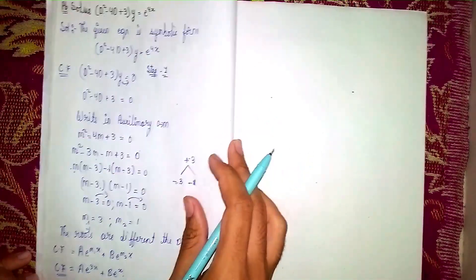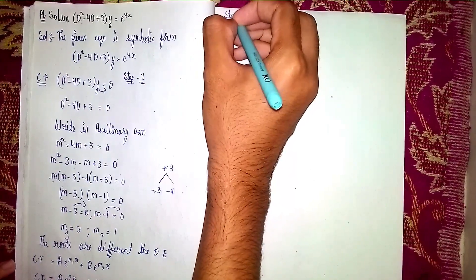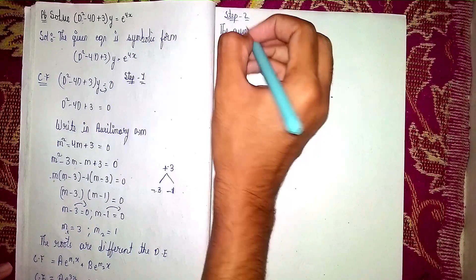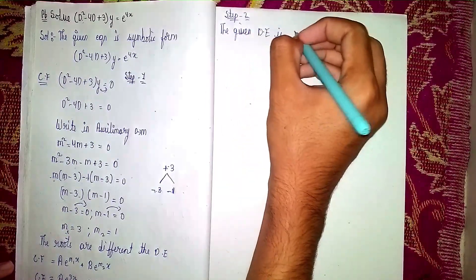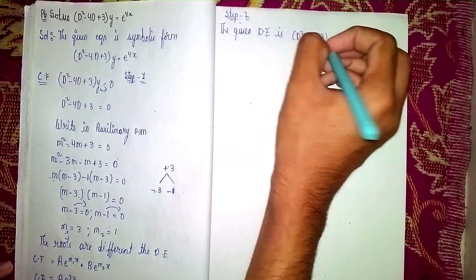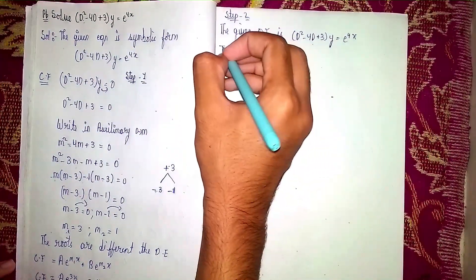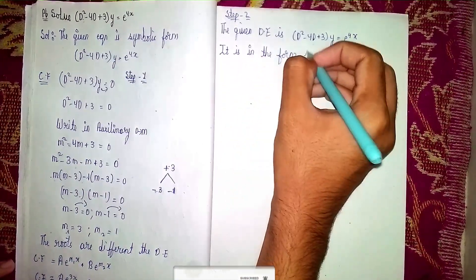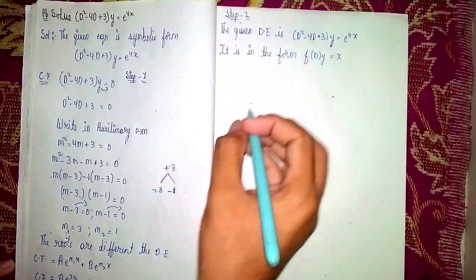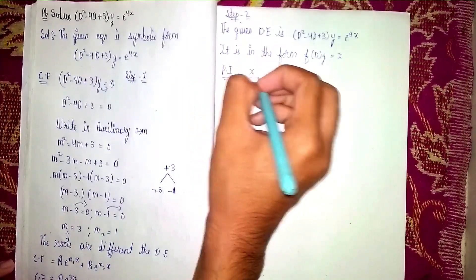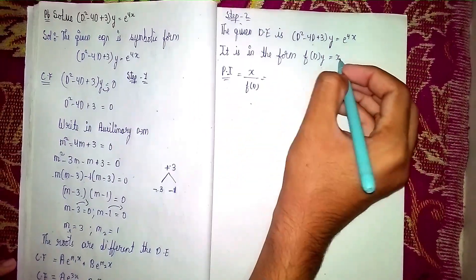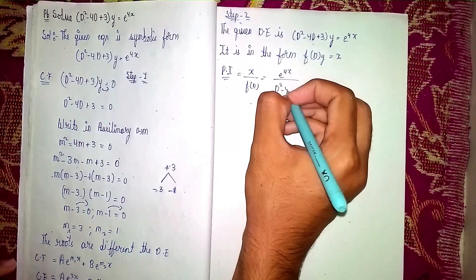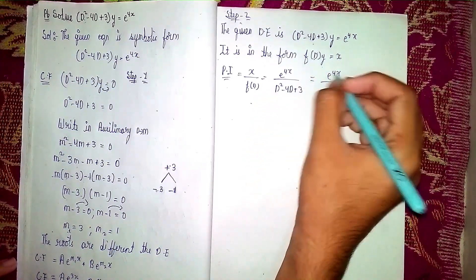Now Step 2: find the particular integral. The given differential equation is d squared minus 4d plus 3 into y equals e power 4x, which is in the form f(D)y equals X. The particular integral equals X divided by f(D), which gives e power 4x divided by d squared minus 4d plus 3.